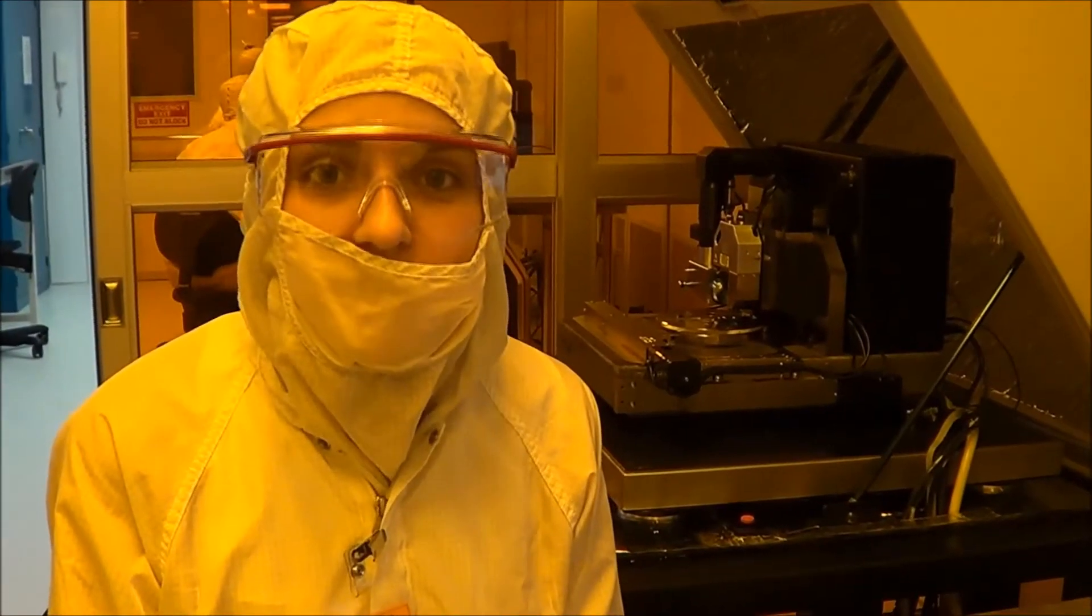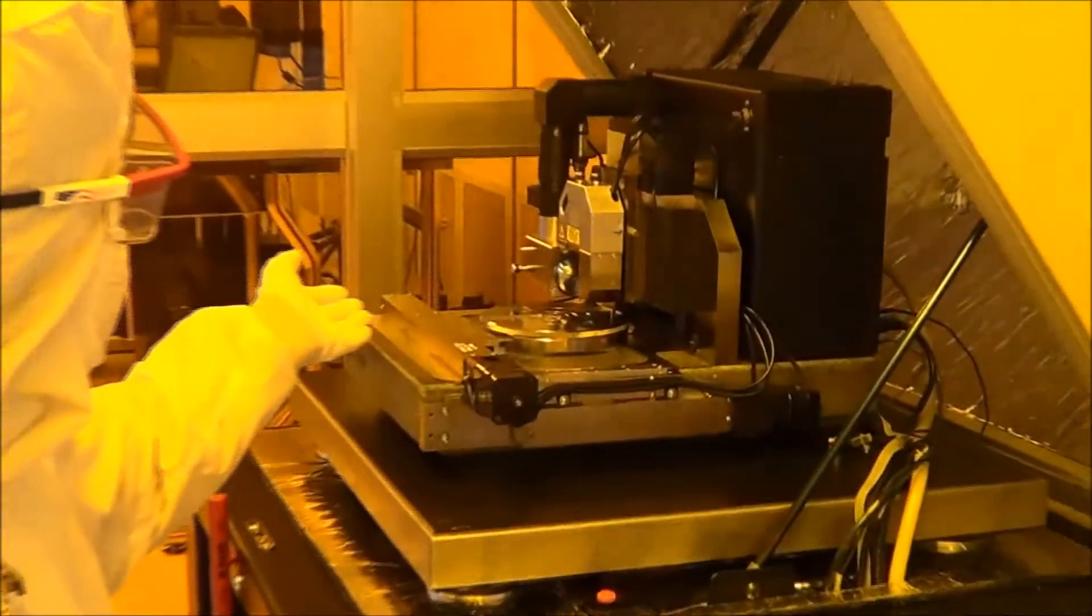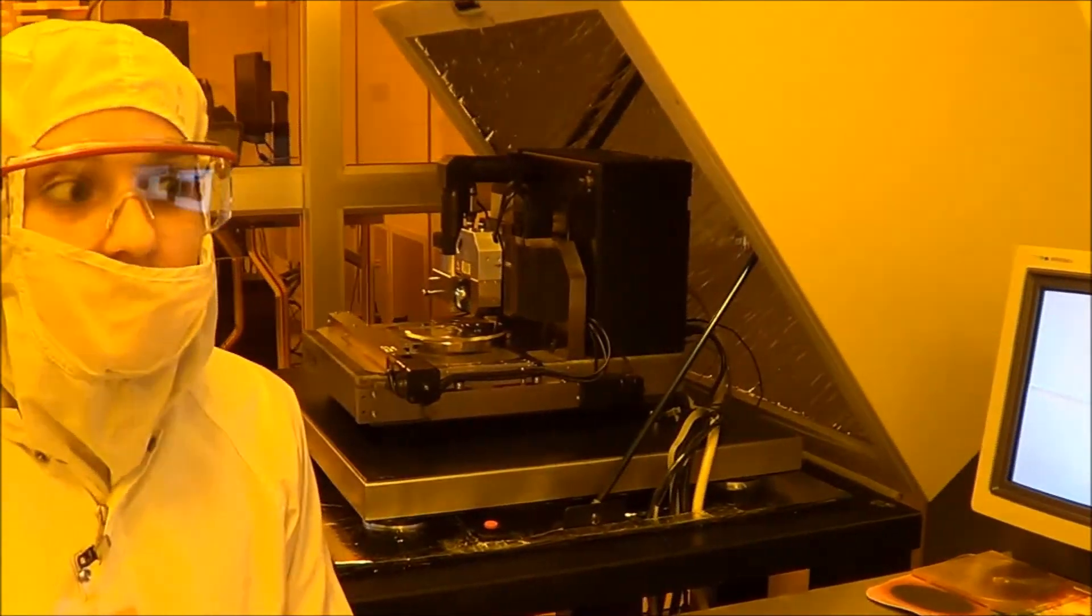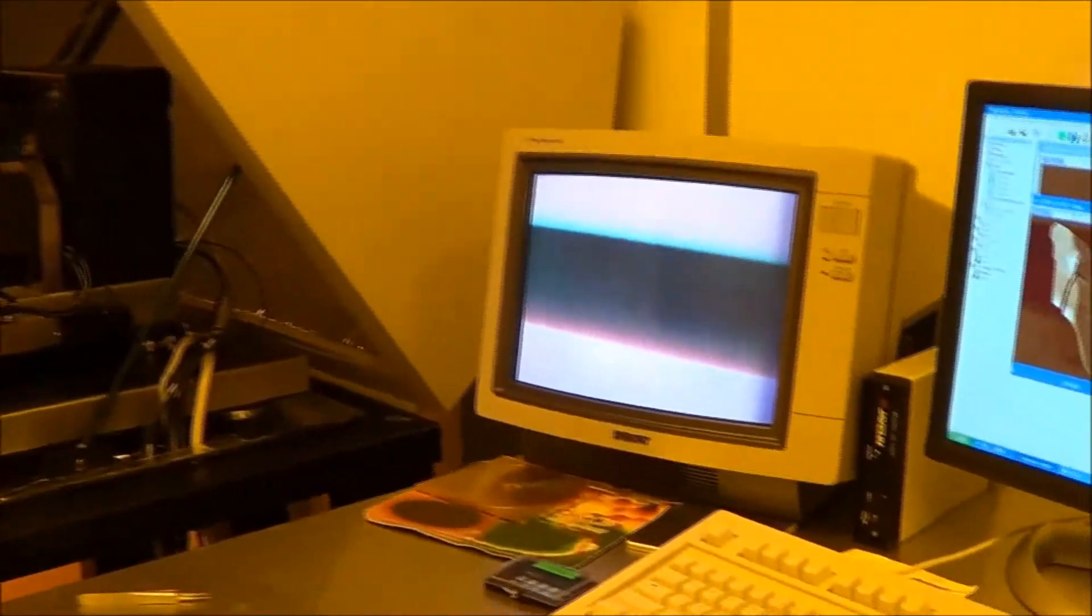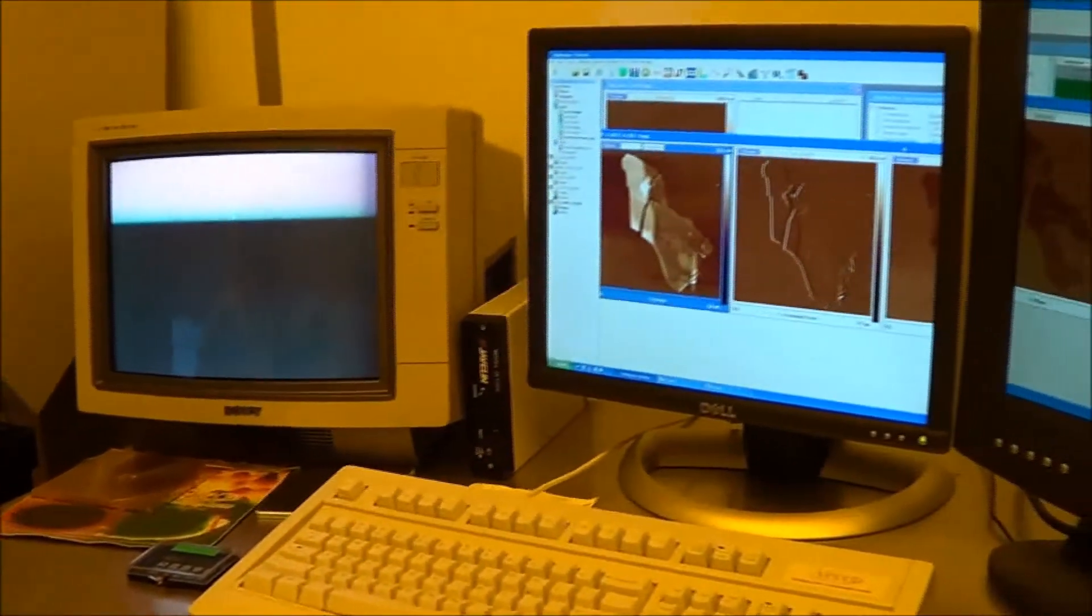The next step in characterizing our flake is using the atomic force microscope. After you've uploaded your sample, the machine will use a very sharp tip to move over the flake and determine vertical thickness. This vertical thickness is very helpful in order to understand whether or not we have exfoliated to monolayer.